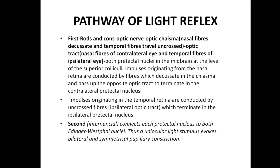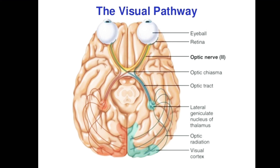The anatomical pathway of the light reflex starts as follows: when you shine a torchlight in front of the eye, sensations from the retina travel via the optic nerve, then go to the optic chiasma. At the optic chiasma, fibers from the nasal retina cross over to the other side of the optic pathway, while the temporal retinal fibers continue to travel along the same side. These fibers then go to the midbrain.